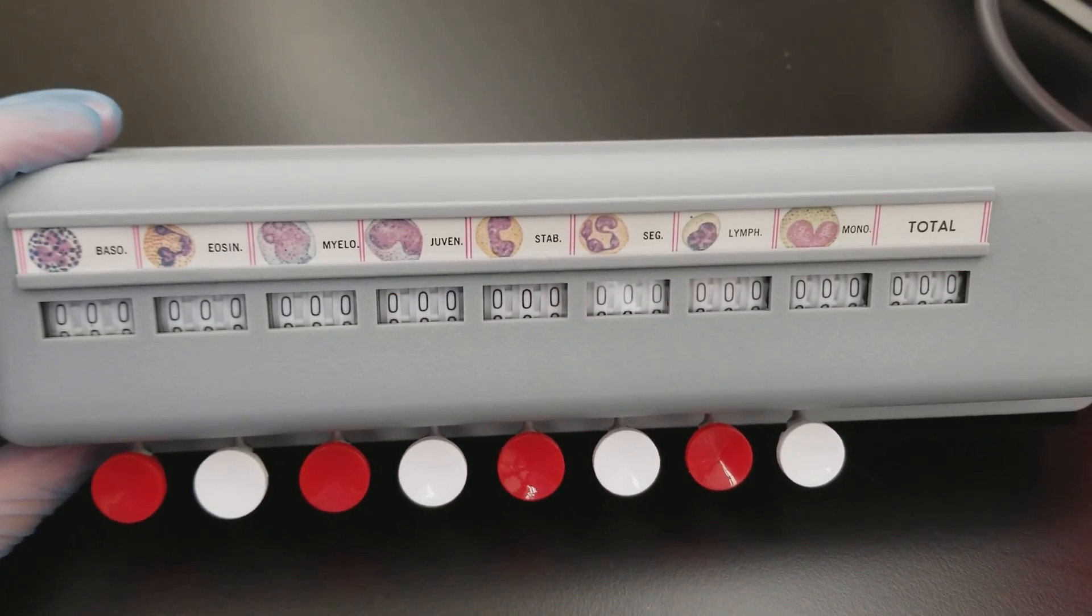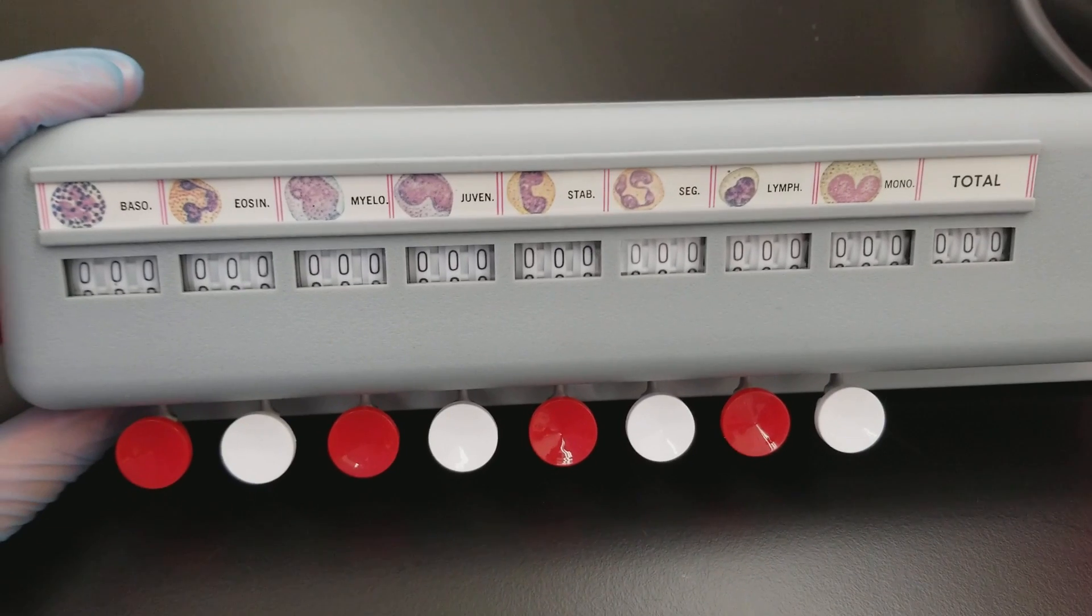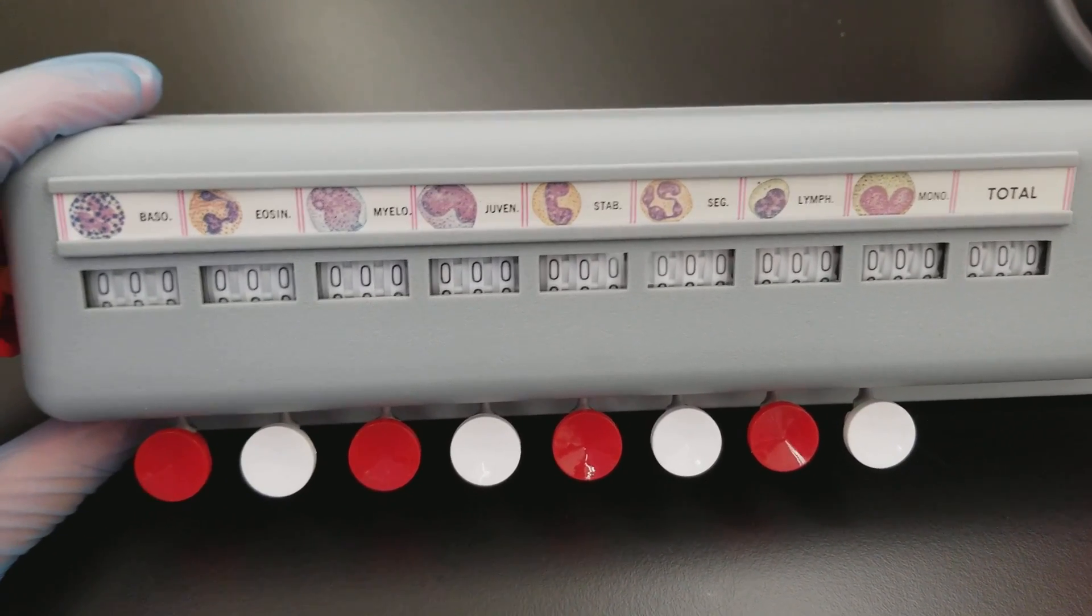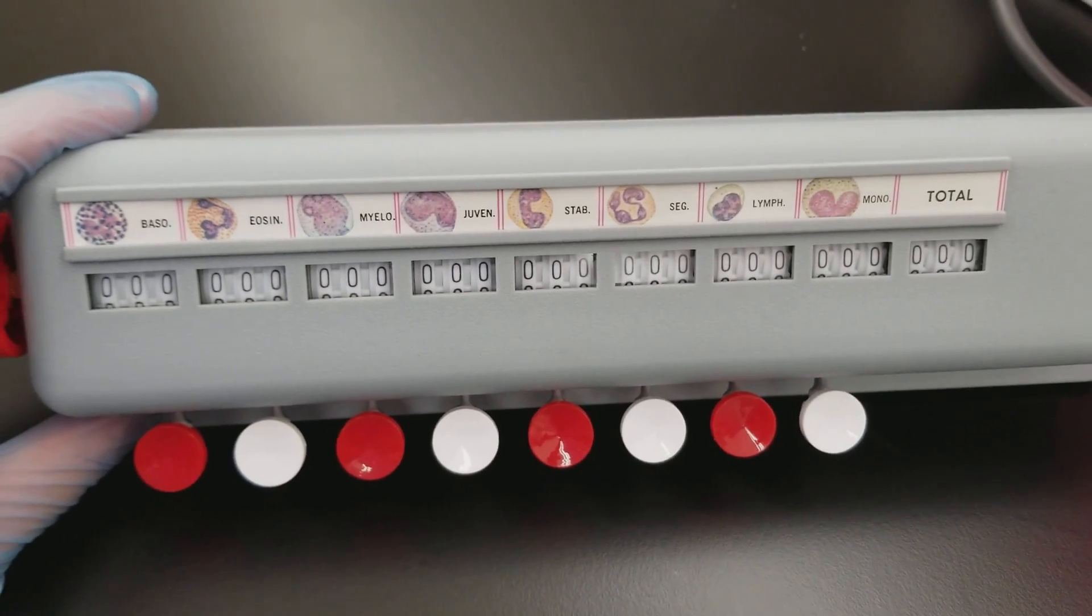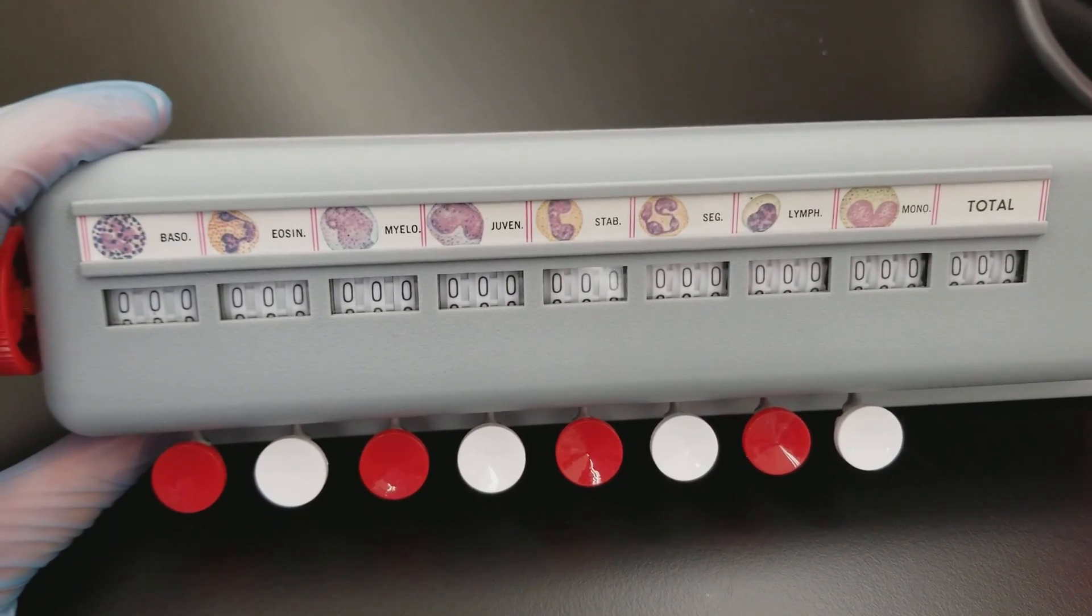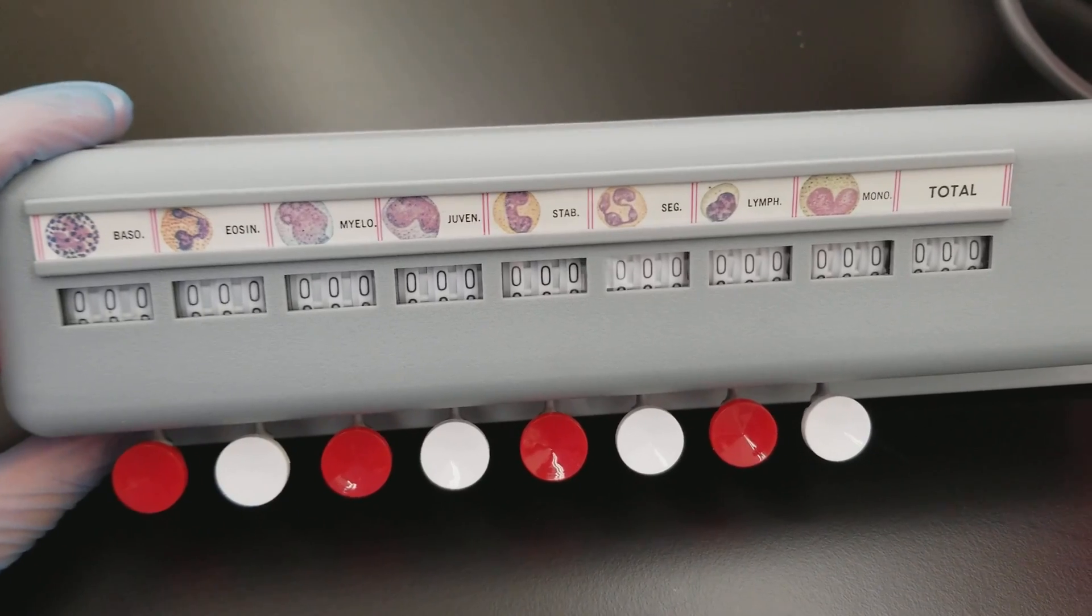The red cells look good in regard to their actual morphology. So you just want to make sure that you scan everything first to see if there are clumps and immature white cells that maybe you may not see in the thin area.